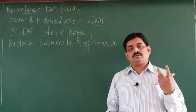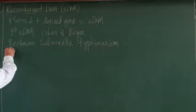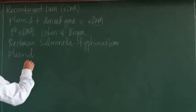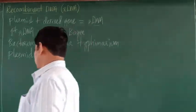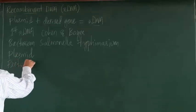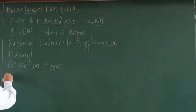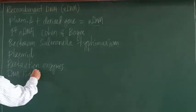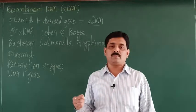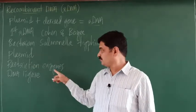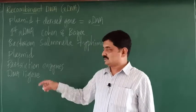To construct a recombinant DNA, certain requirements are needed. The first requirement is a plasmid. Then restriction enzymes are required, and also DNA ligase, which is another enzyme. So a plasmid, restriction enzymes, and DNA ligase are all required to construct recombinant DNA.